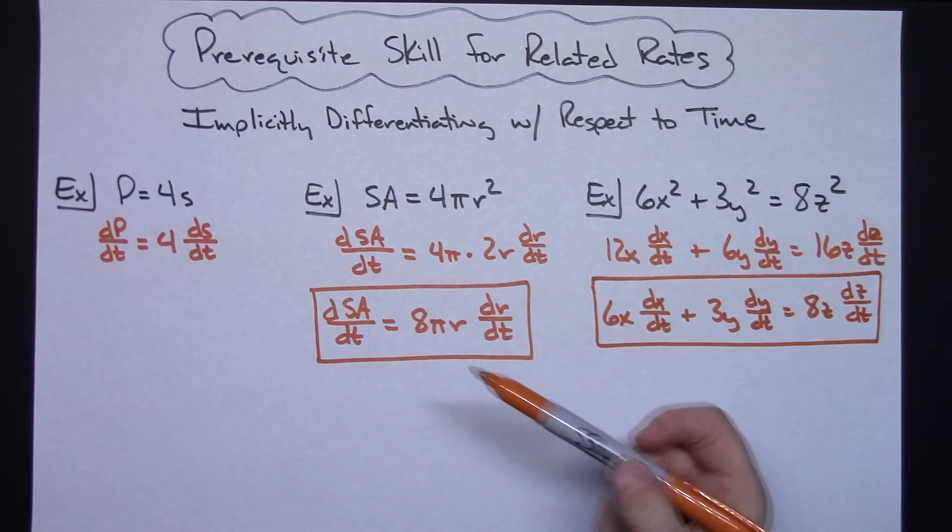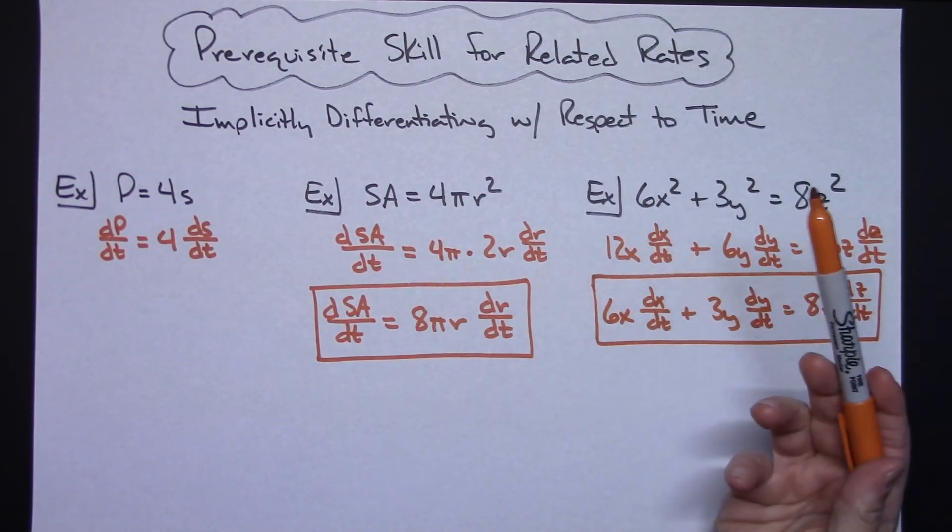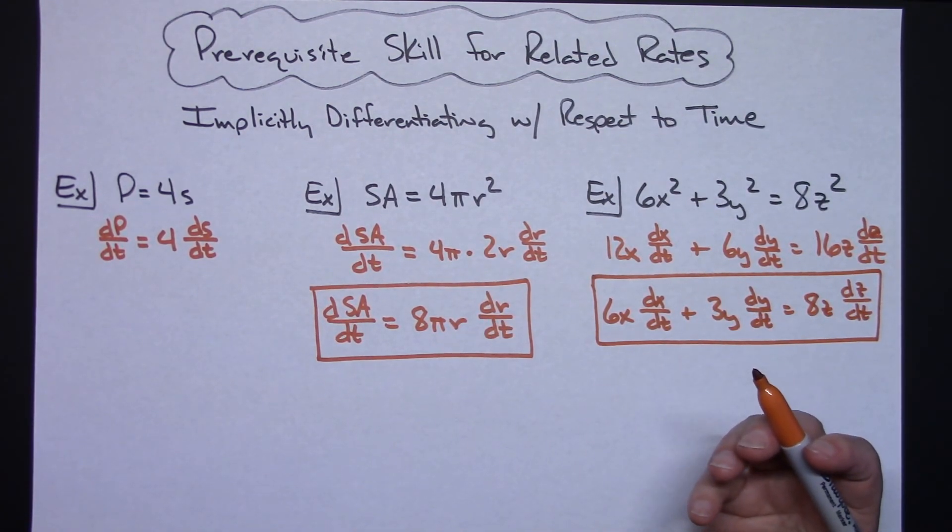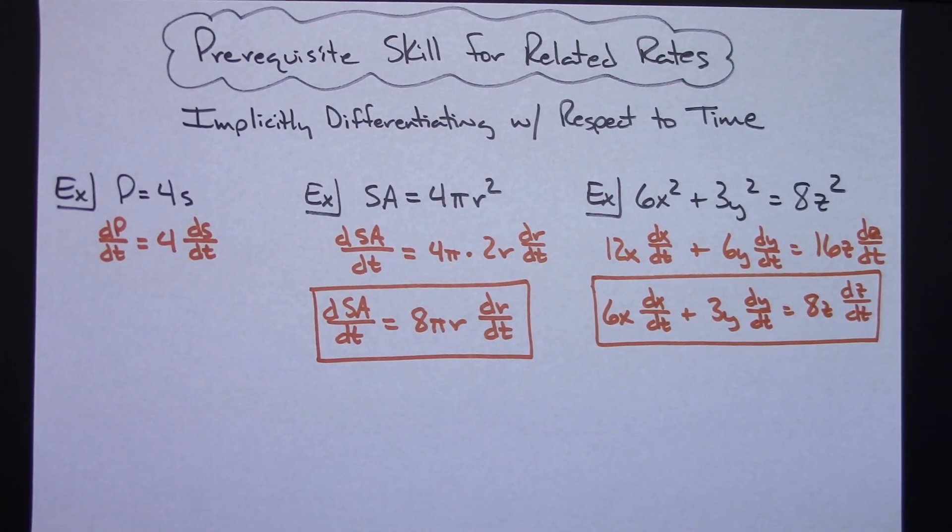But this idea of getting this chain rule in with respect to time every time you differentiate a variable is very important. It's implicitly differentiating with respect to time and this is a definite skill that you need to be able to do because this is the first thing you're probably going to have to do in a related rates problem. Definitely thanks for watching and be sure and watch for some more related rates videos. Thanks.